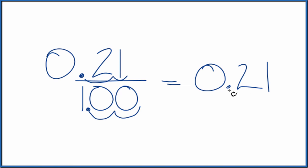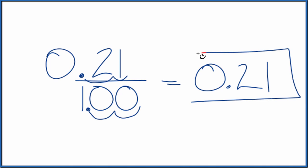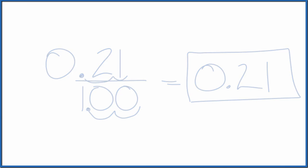So once again, the fraction 21 over 100, 21 one-hundredths, equals the decimal 0.21. This is Dr. B, and thanks for watching.